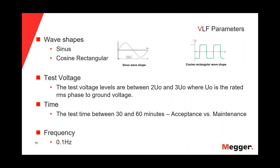To have a water tree, we need water in the insulation, electrical stress, and a lot of time. So in a new cable, we are looking mainly for workmanship issues or manufacturing defects, which we detect by means of electrical trees. Electrical trees grow very fast. For that reason, we don't need too much time — we can do a commissioning test in 30 minutes. But for a maintenance test on a cable in service for 20 years, we may have wire trees, which grow slowly, so we need to extend the test time to 60 minutes.